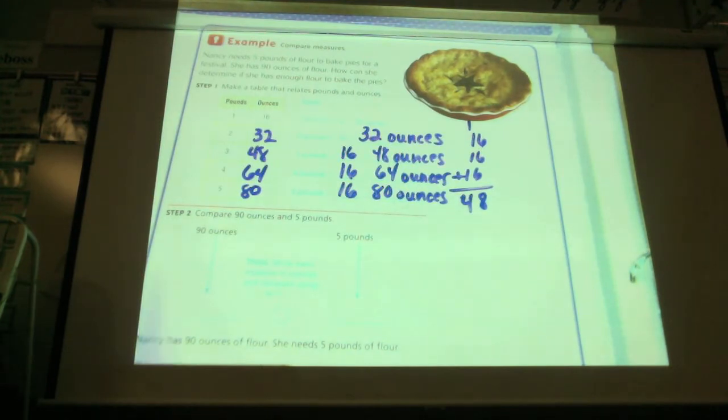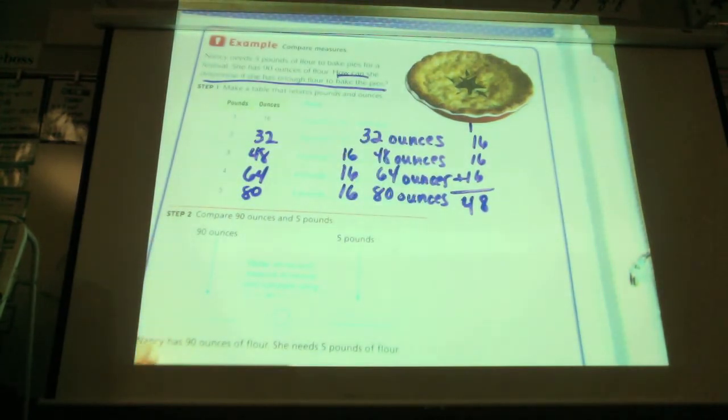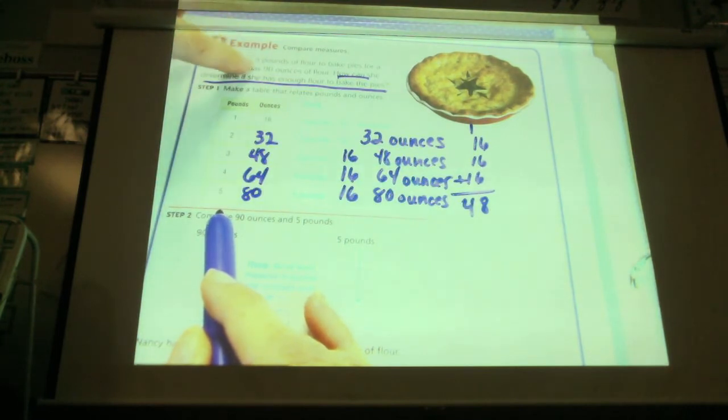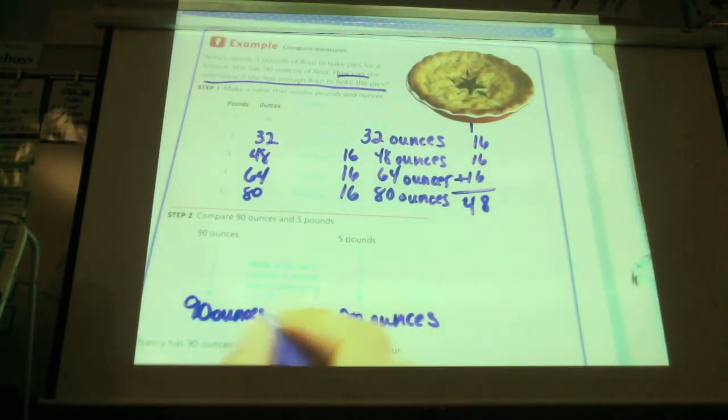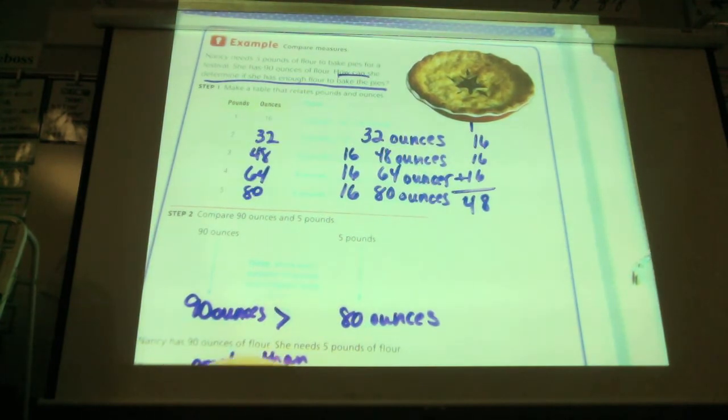Go ahead and underline the question in your book. What was the question? How can she determine if she has enough flour to bake the pies? And what numbers are we trying to figure out? She needs 5 pounds and she knows she has 90 ounces. Look down here. 5 pounds is how many ounces? 80. And she has 90. Does she have enough? Yes. Her need is 80, she has 90, so she has enough. So 90 ounces and 5 pounds equals 80 ounces. 90 is greater than 5 pounds. So she has enough flour to make the pies.